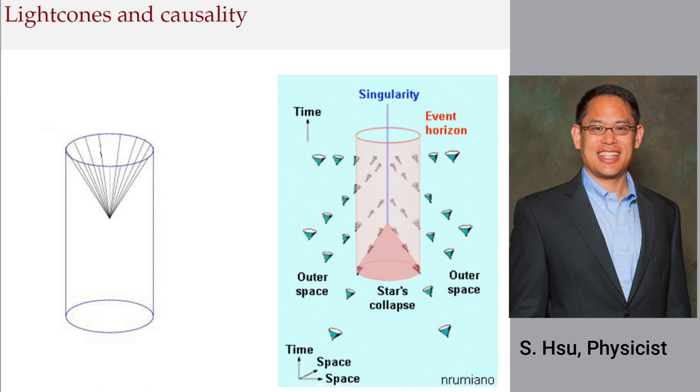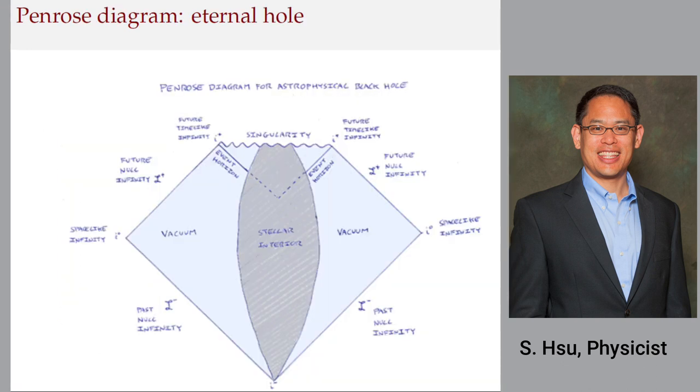And what that means is every observer that reaches the inside region of that cylinder or inside the horizon, their future includes a singularity, no matter how they fire their rocket engines or navigate around, they will in the end hit the singularity. And so there's a disconnect causally between the interior of the black hole and the exterior of the black hole. Now, in order to enable clear thinking about the causal structure of spacetime, Penrose invented a set of diagrams, a way of visualizing these spacetimes.